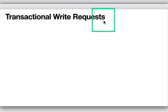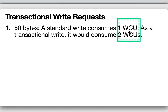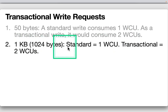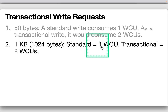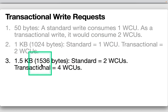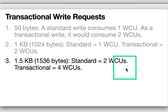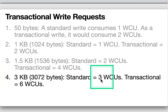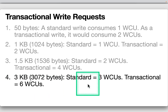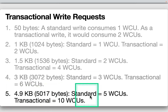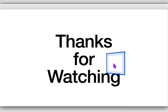For transactional write requests, the cost is double the standard write. A 50-byte item: standard one WCU, transactional two WCUs. A 1KB item: standard one WCU, transactional two WCUs. A 1.5KB item: standard two WCUs, transactional four WCUs. A 3KB item: standard three WCUs, transactional six WCUs. A 4.9KB item: standard five WCUs, transactional ten WCUs. And that's all — thanks for watching.